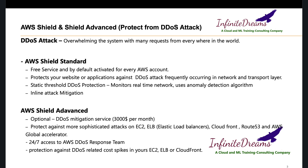Both AWS Shield and Shield Advanced give us protection from DDoS attacks. DDoS stands for Distributed Denial of Service. What happens is sometimes your application may get a lot of requests coming from across the world, which can overwhelm your useful traffic so that your service may not be available. Suppose your service can only serve 10,000 requests per second but you are getting maybe five million requests at that point — your service may become unavailable.